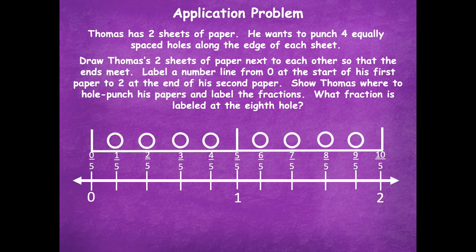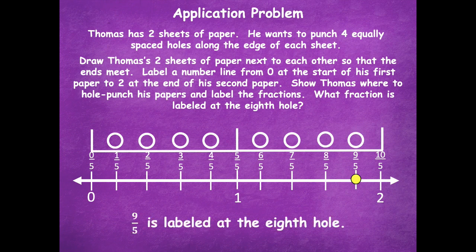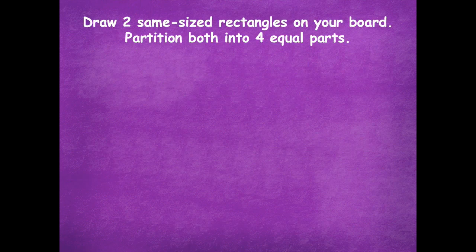A trick: when you get to those whole numbers, take the top number and divide it by the bottom number and that should give you your whole number on the number line. For example, ten divided by five is two, so that's how you can check that you're labeling your fractions correctly. Now I need to find that eighth hole: one, two, three, four, five, six, seven, eight — that is nine-fifths. So nine-fifths is labeled at the eighth hole. Great job if you got it! Now let's jump into today's work.